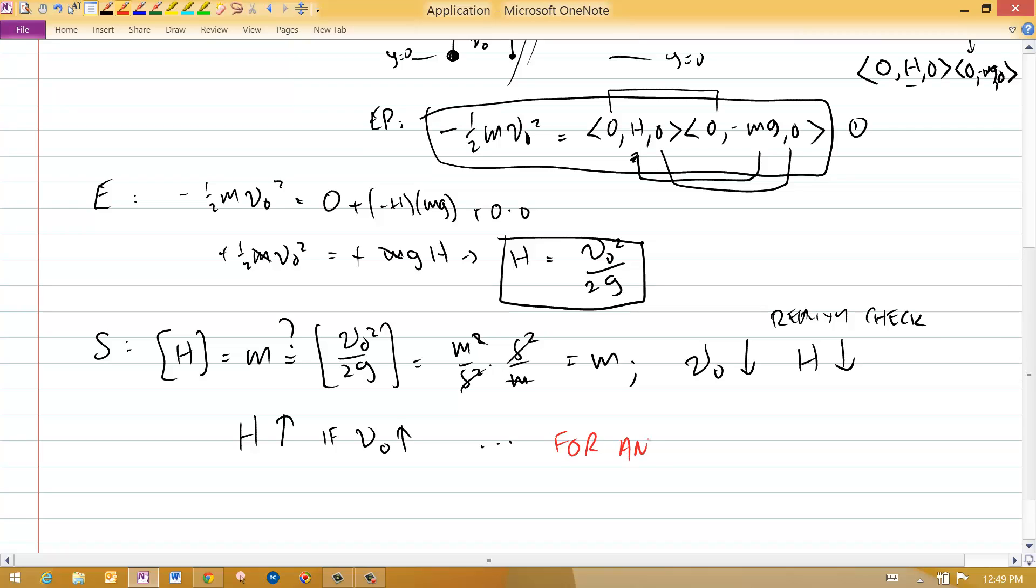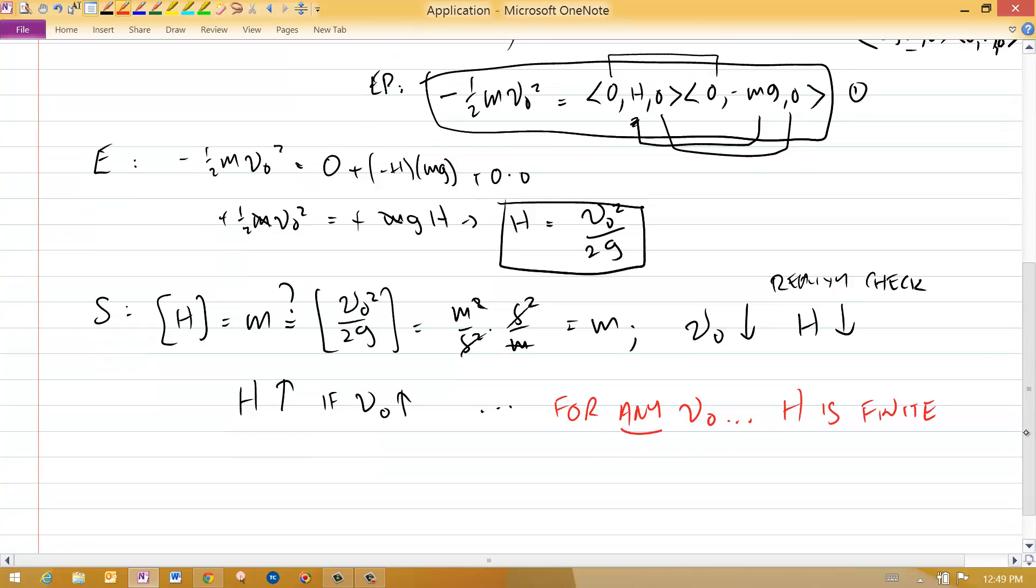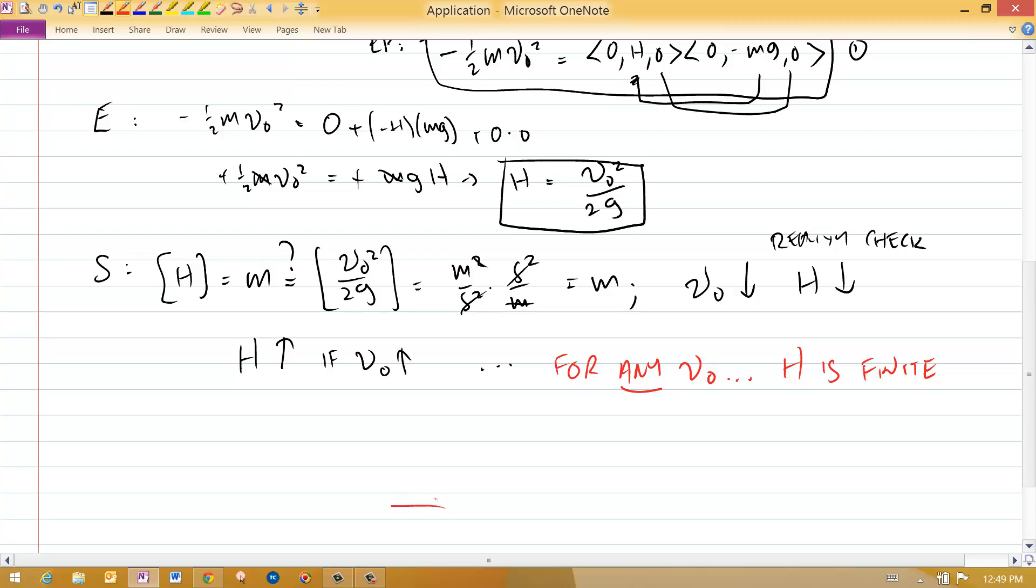For any v0, h is finite. Think about what happens here for the energy principle. No matter how fast you shoot this thing, v0 is very, very big. Eventually, there is some spot where it stops, and if it stops, there's still a gravity force pulling it downward, so it's going to have to come back to the ground. What this means is, colloquially, what goes up